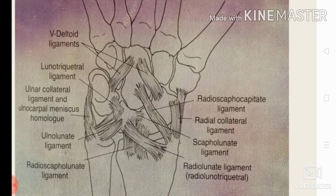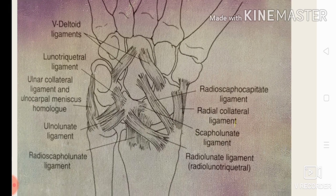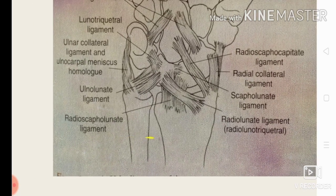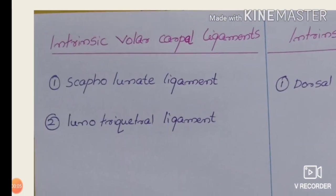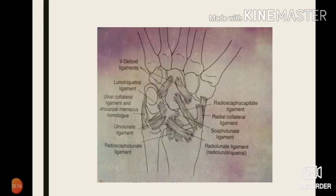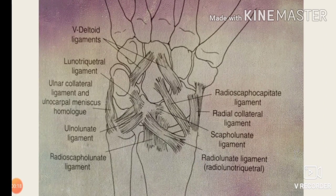You can see the radioscaphocapitate ligament, the radioscapholunate ligament, the ulnar collateral ligament, and the ulnolunate ligament on the diagram. Next we move to the volar intrinsic carpal ligaments, which include the scapholunate ligament and the lunotriquetral ligament. These ligaments are important and will be discussed in later videos. You can see the scapholunate ligament and the lunotriquetral ligament on the diagram.